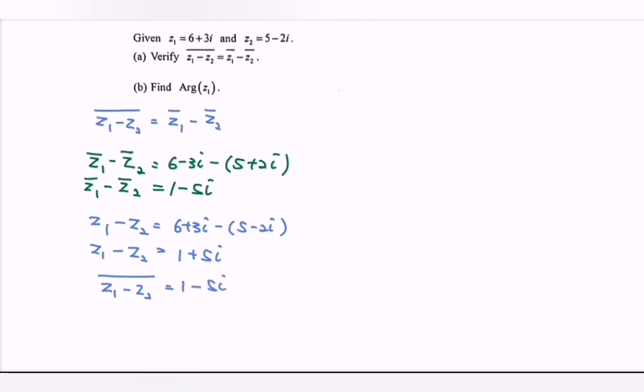As we notice, we have 1 minus 5i, which equals 1 minus 5i. So as a conclusion, the conjugate of z sub 1 minus z sub 2 is indeed equals to conjugate of z sub 1 minus the conjugate of z sub 2. So that is the situation we verify.